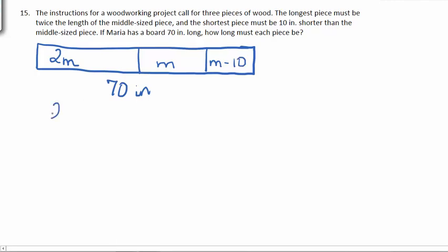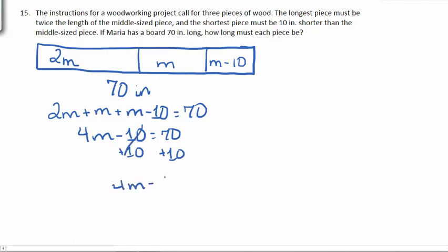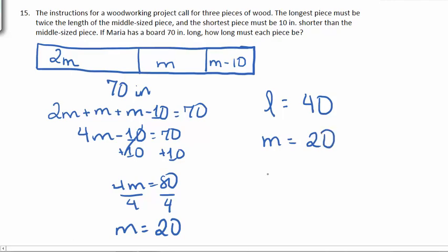And these should add up to be the entire length of the board, which is 70. 2M plus M plus M minus 10 is equal to 70. Combining, that's 4M minus 10 is equal to 70. Adding 10 to both sides gives us that 4M is equal to 80, and dividing by 4 gives us that the middle size piece should be 20 inches. The long piece is twice this, so 40. The middle piece has to be 20 inches, and the short piece has to be 10 inches shorter than this, so 20 minus 10 is 10.